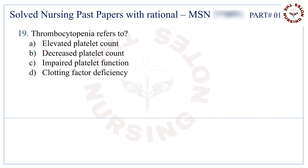Question number 19: Thrombocytopenia refers to. The correct answer is B — decreased platelet count.